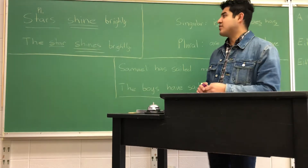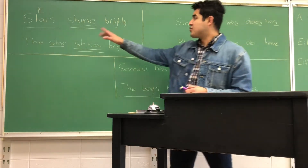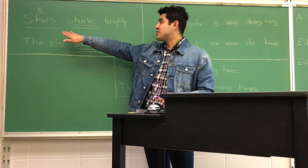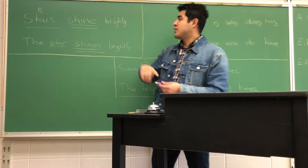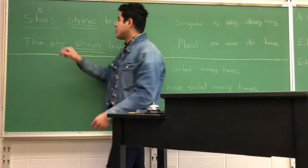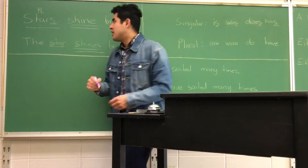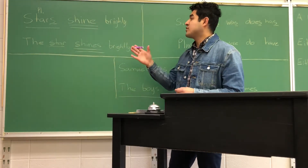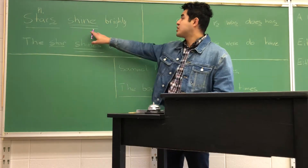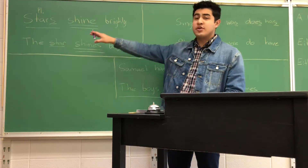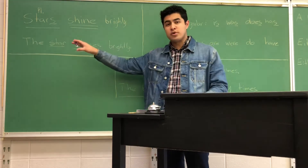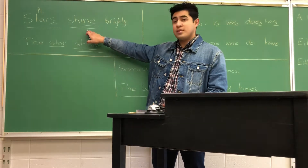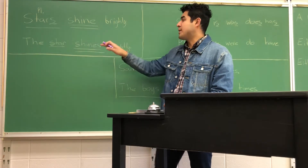So we have our two sentences here. 'Stars shine brightly.' Our subject in this sentence is 'stars' and we see that it's plural — we've got our S right there. Plural stars. So the subject of our sentence is plural, so it is going to take a plural verb, and we're going to explain plural verbs here in a minute.